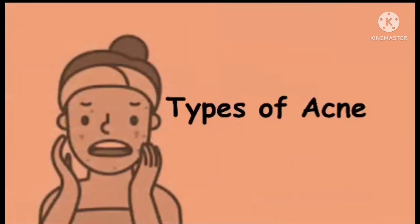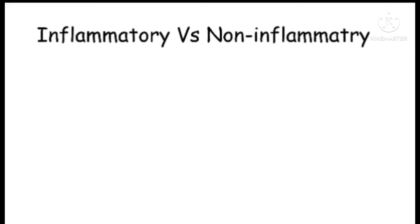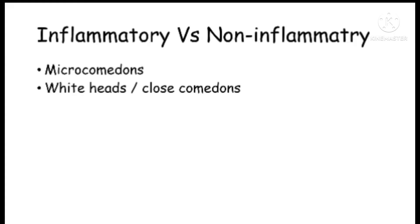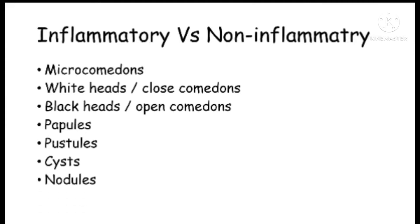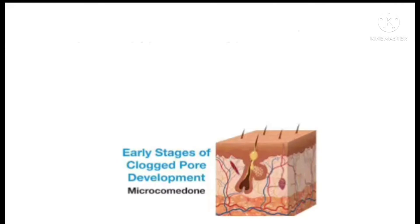In this video we are going to talk about the types of acne. There are two types of acne: inflammatory and non-inflammatory. The non-inflammatory types are micro comedones, whiteheads (also called closed comedones), and blackheads (also called open comedones). The inflammatory types start from papules, then pustules, then cysts, and finally nodules.